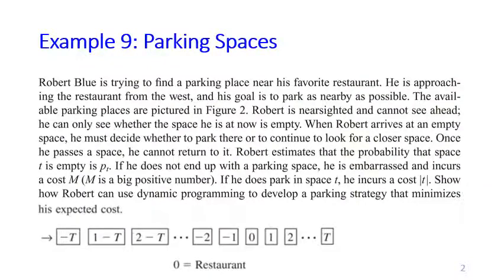Somebody called Robert Blue is trying to find a parking place near his favorite restaurant. He is approaching the restaurant from the west — so this is west, and that is east. His goal is to try to park as nearby as possible to the restaurant, which is at point 0.